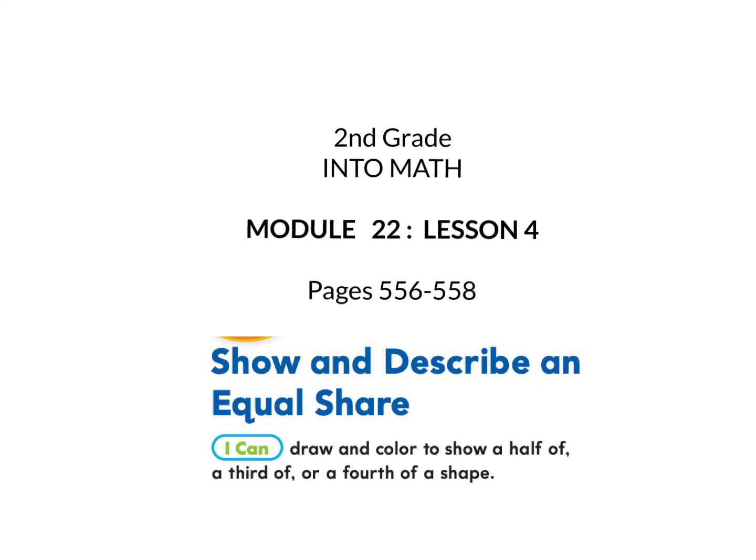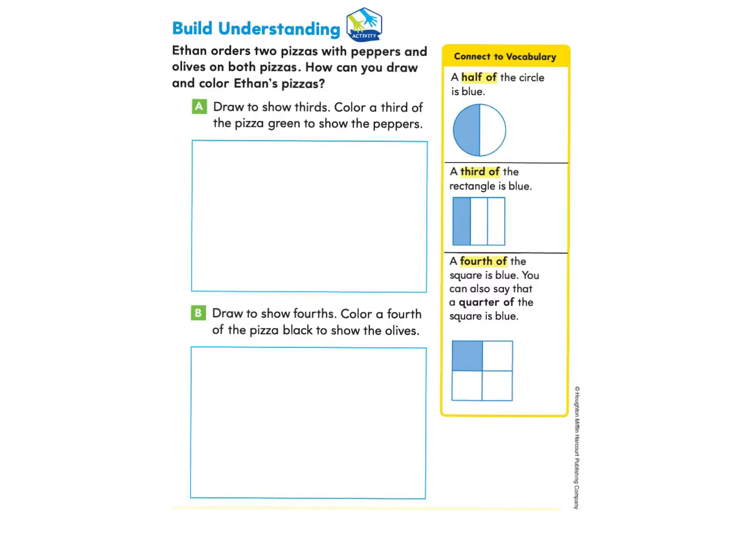This is second grade math module 22, lesson 4: Show and Describe an Equal Share. I can draw and color to show a half of, a third of, or a fourth of a shape. Please gather your workbook and a pencil and turn to page 556. We will start under Build Understanding.